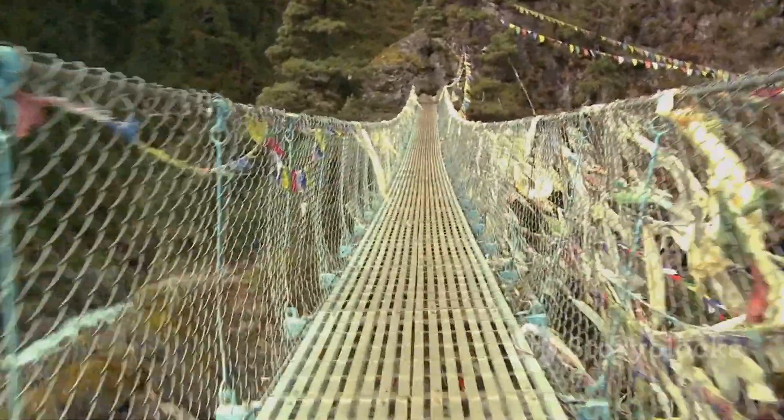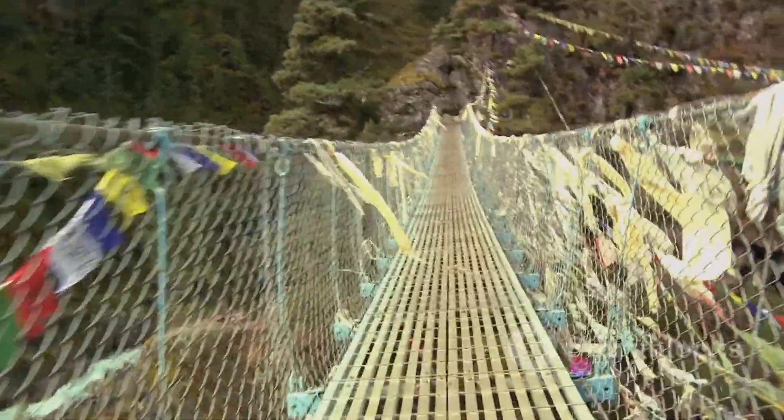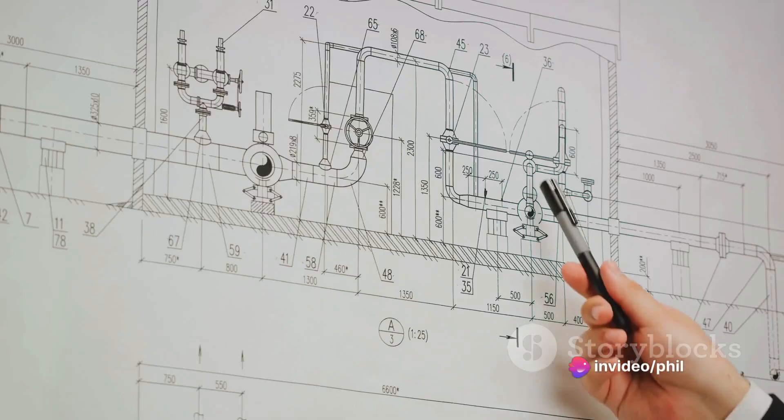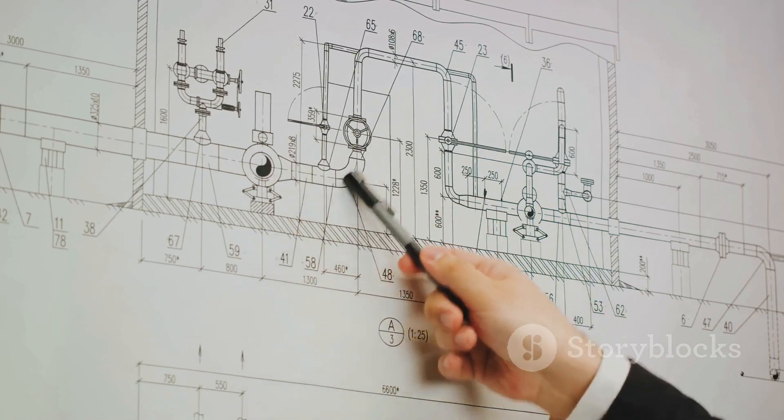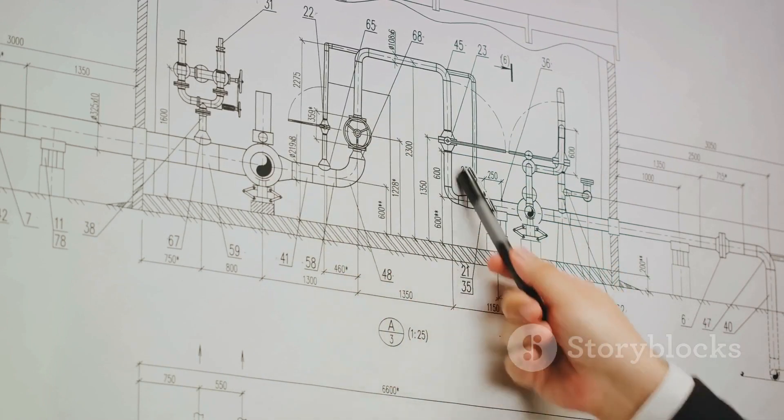Even the stunning suspension bridges that span our rivers and bays owe their strength and stability to parabolas. The main supporting cables form a parabolic curve, distributing the weight of the bridge and the traffic it carries evenly across the supporting pillars.